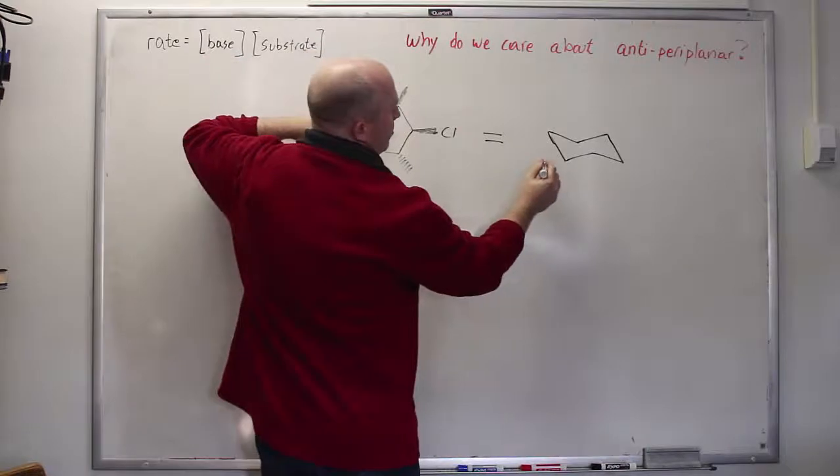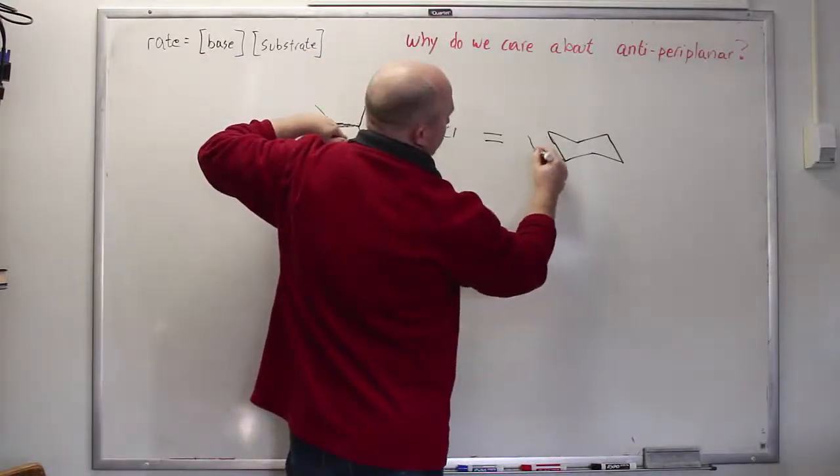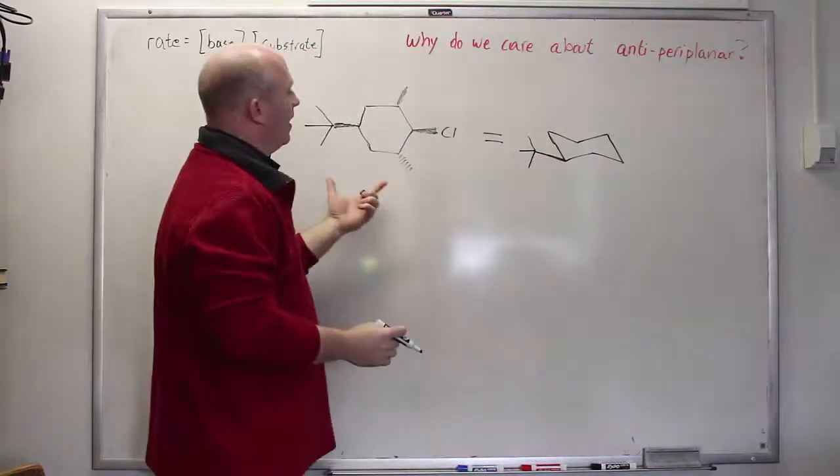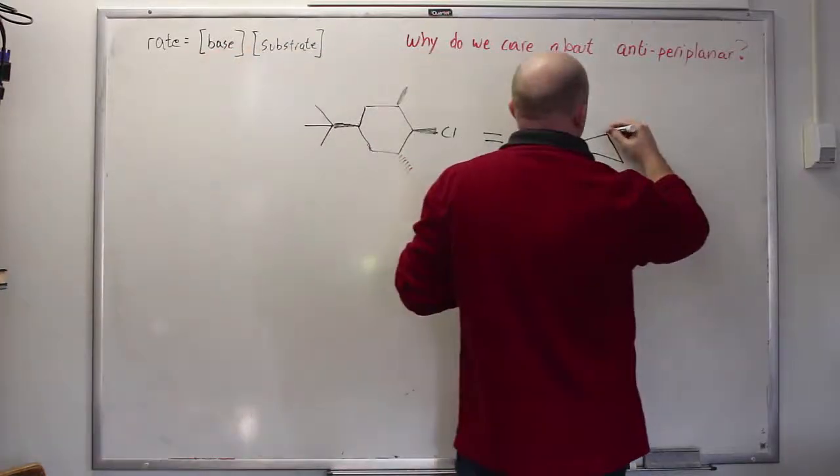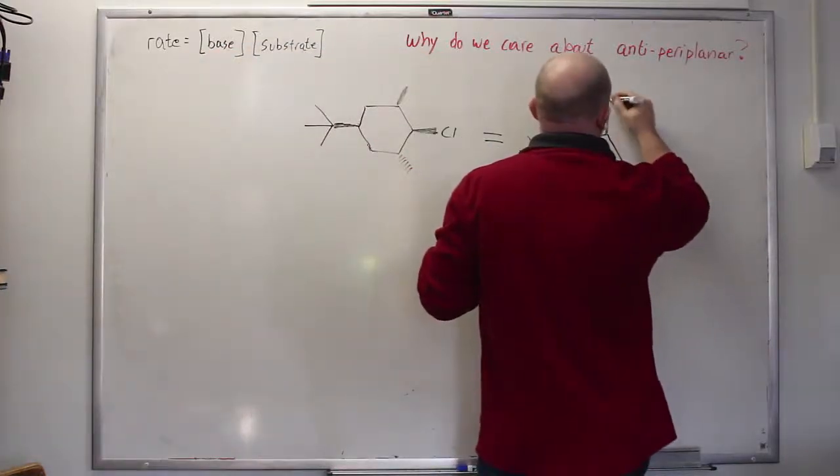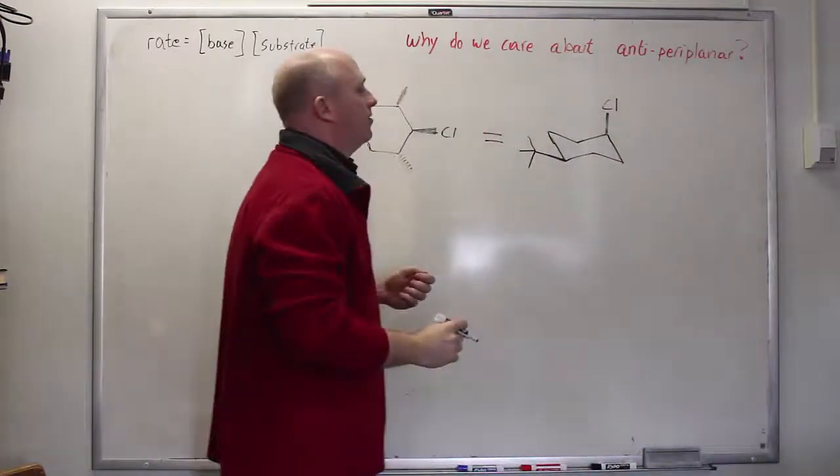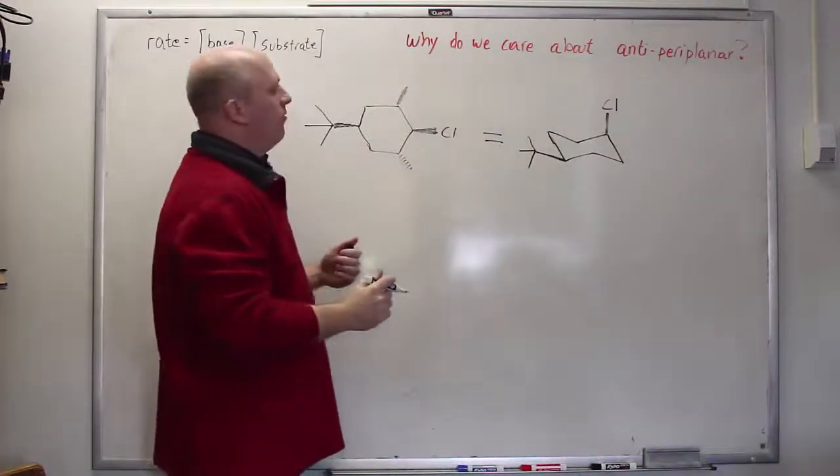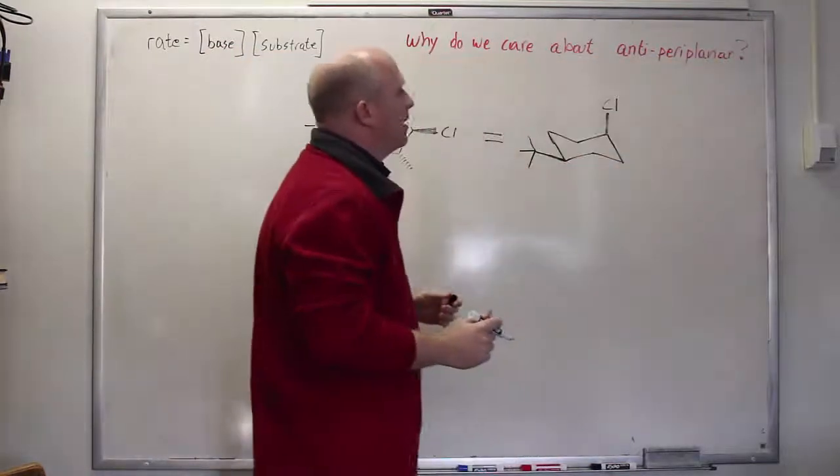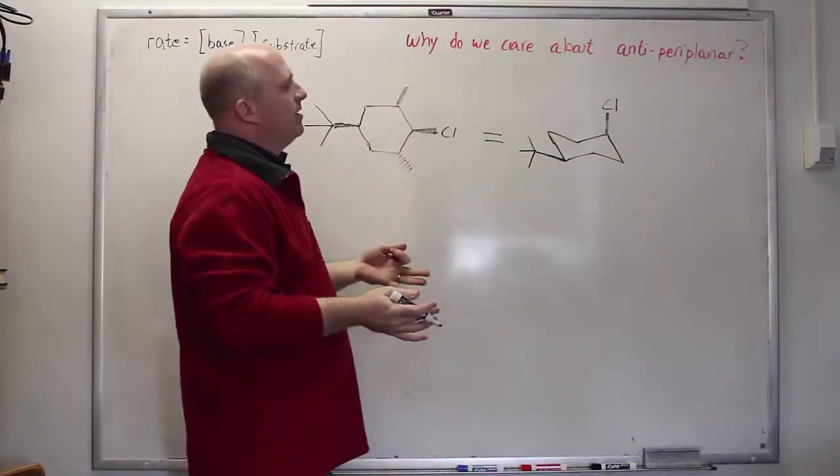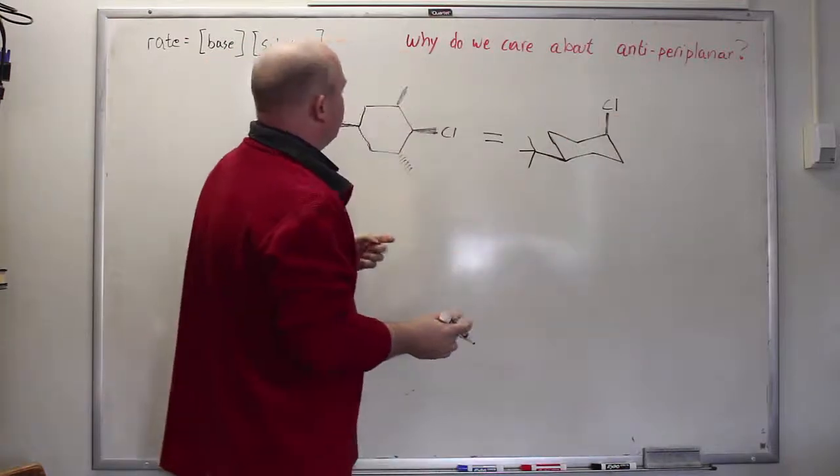We're going to need to put the t-butyl up and equatorial, which places it right there. That then is locking everything else in place and you'll notice that the chlorine itself is likewise up, but in this up case it is axial. And this is important because in order for an anti-periplanar style arrangement to take place so that you can do an E2 elimination, the chloride actually needs to be axial.